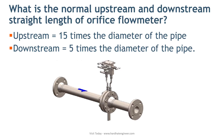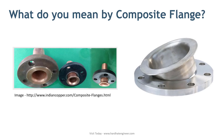What do you mean by composite flange? A flange that is made of more than one material is called a composite flange. A lap joint flange is a good example, having two components: a stub end and a loose backing flange. The stub end is butt welded to the pipe and the backing flange freely moves over the pipe. The backing flange can be of a different material than the stub end, and is generally made of carbon steel to save cost.